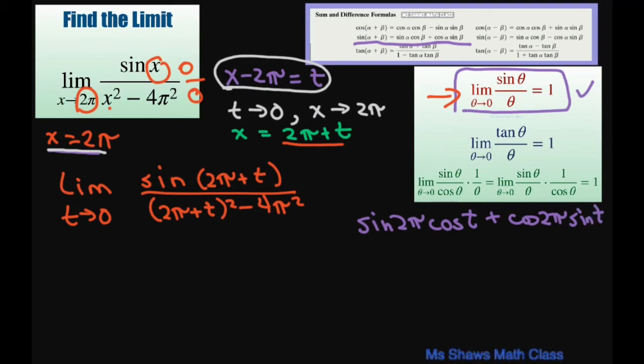All right, so basically sin(2π) is 0, cos(2π) is 1. So this whole thing is just going to be sin(t).